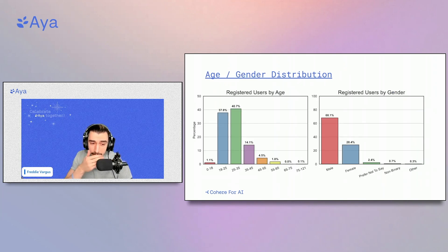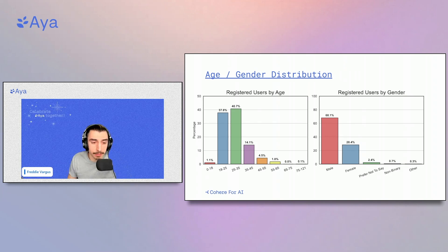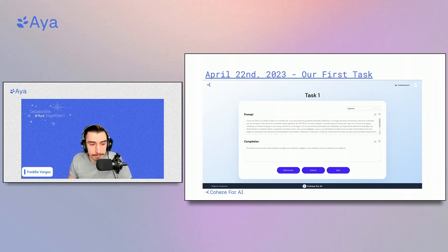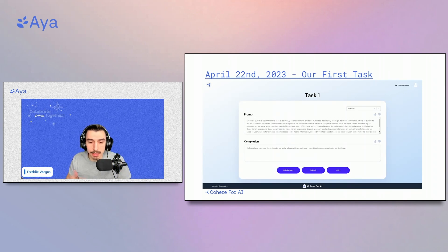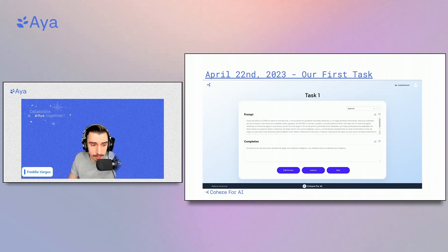After a few months we added the option to provide age and gender information, and in this area I think we can still grow a lot more. Around April we finally had our first task focused on re-annotations, and we did some internal testing and iterations on it until it felt really responsive before we started to show what data we had.